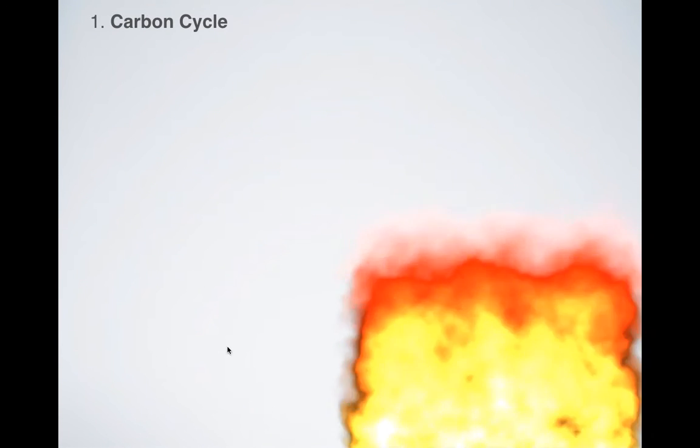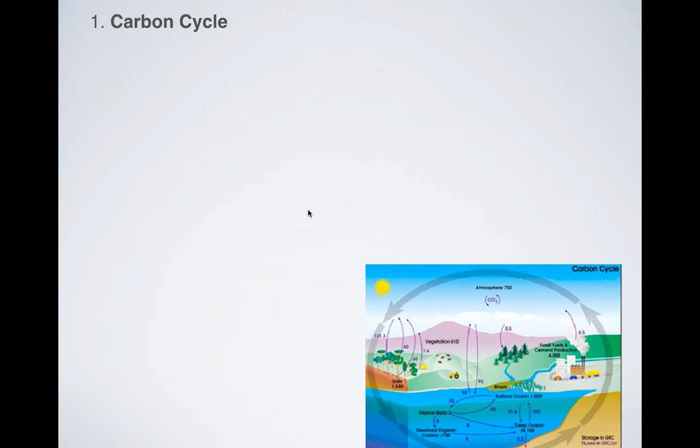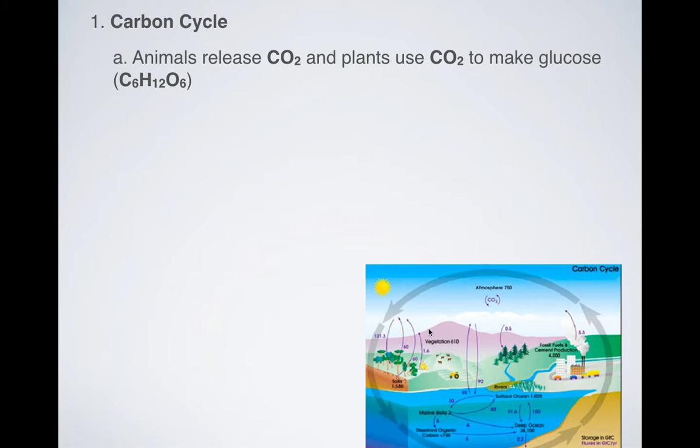Now what are we going to look at? We're going to look at different examples of how molecules and elements are recycled on earth. So we're going to start with carbon. And so here is the carbon cycle.